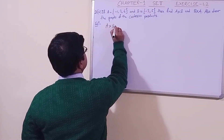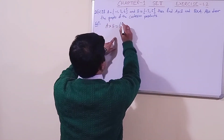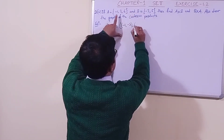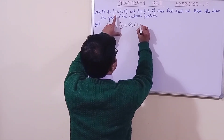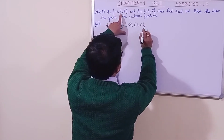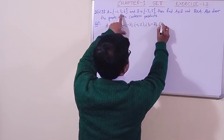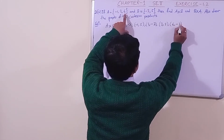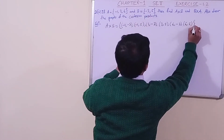For A cross B, let us find the individual ordered pairs. First, -1 should be paired with -3, giving (-1, -3), then (-1, 5). The function of -1 is done. Then 3 is connected with -3, giving (3, -3), then (3, 5). Then 6 is paired with -3, giving (6, -3), then (6, 5).